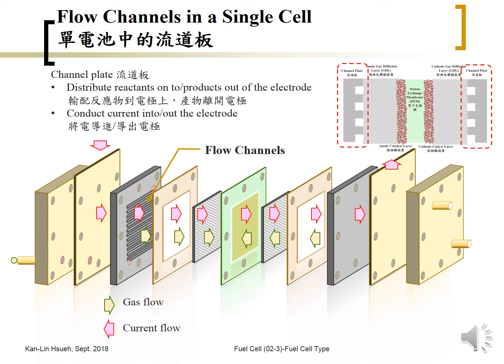The graphite plate also acts as insulation to prevent any kind of chemical from getting in touch with the current collector. The reason we need a current collector is given in the next slide.